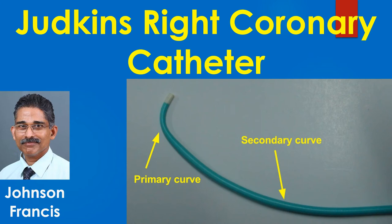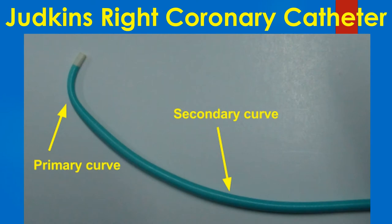Jutkin's right coronary catheter has a sharp primary curve and a shallow secondary curve. The primary curve engages the right coronary ostium while the secondary curve engages the opposite wall of the aorta. The tip usually tapers to 5 French size irrespective of the nominal diameter of the catheter. The short form for Jutkin's right catheter is JR.